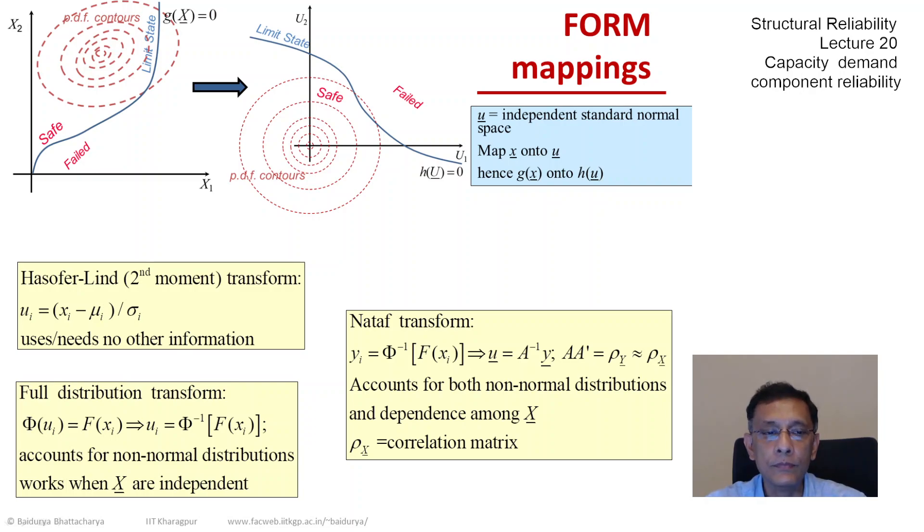Now obviously, this sort of dependence among the x's is incomplete because the correlation coefficient only gives me a linear dependence information. But that is not a big problem from a practical point of view because in most cases we do not have information beyond the linear sort. All we have would be the CDFs, the marginal CDFs of the x's, and the correlation or covariance matrix. Then this Nataf transformation would be very, very appropriate for mapping from x to u.